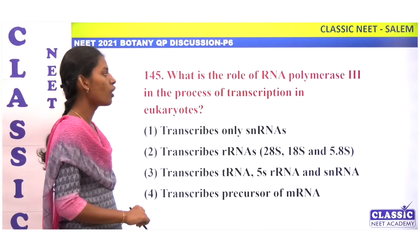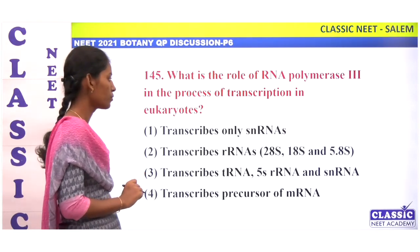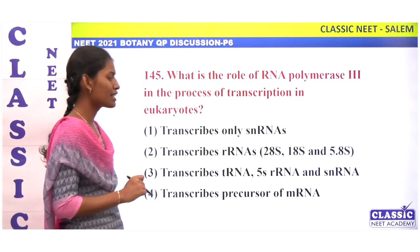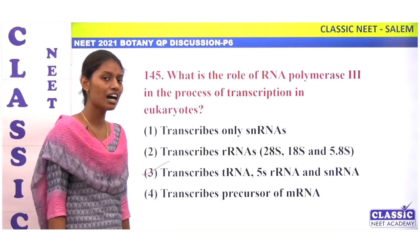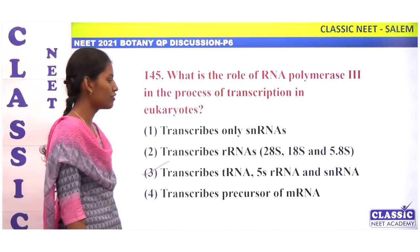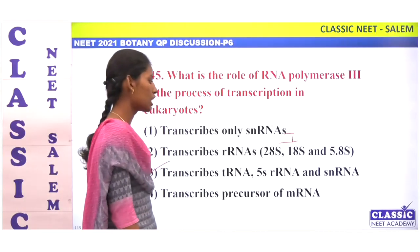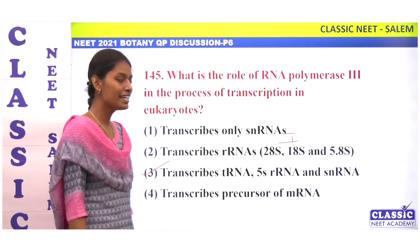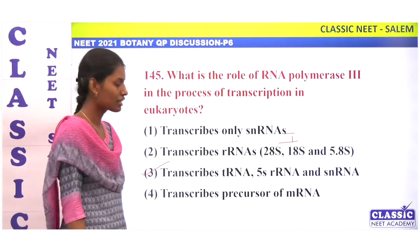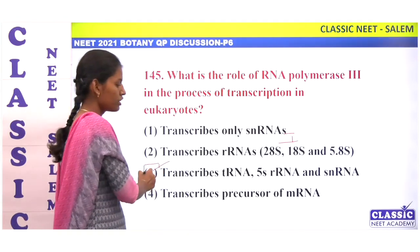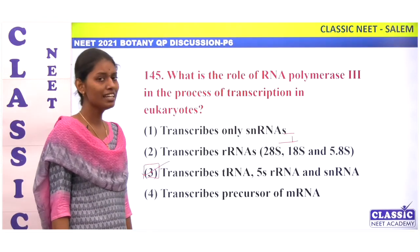What is the role of RNA polymerase 3 in the process of transcription in eukaryotes? RNA polymerase 1 transcribes rRNA like 28S, 18S, and 5.8S. RNA polymerase 3 transcribes tRNA, 5S rRNA, and snRNA. Option 3.